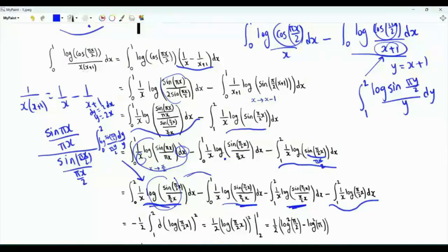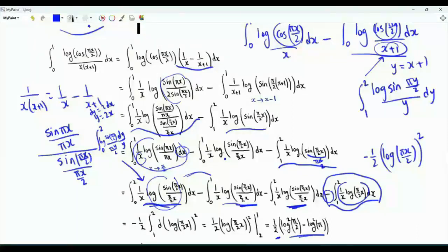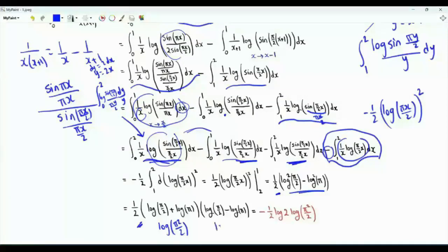After cancellation, the integral from 0 to 1 of log(cos(πx/2)) over x(x+1) equals minus the integral from 1 to 2 of log(πx/2)/x. The antiderivative, taking the minus sign into account, is −(1/2)·log²(πx/2). Using the limits of integration, we get (1/2) times [log²(π/2) − log²(π)], which factors as (1/2)·[log(π/2)+log(π)]·[log(π/2)−log(π)]. Since log(π/2)−log(π) = log(1/2) = −log 2, the result is −(1/2)·log 2·log(π²/2).